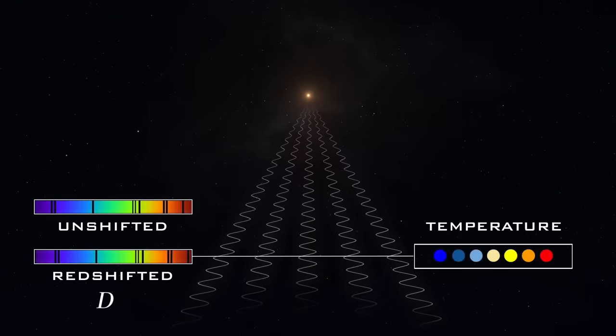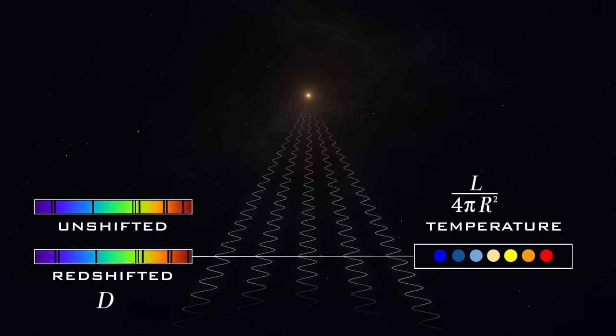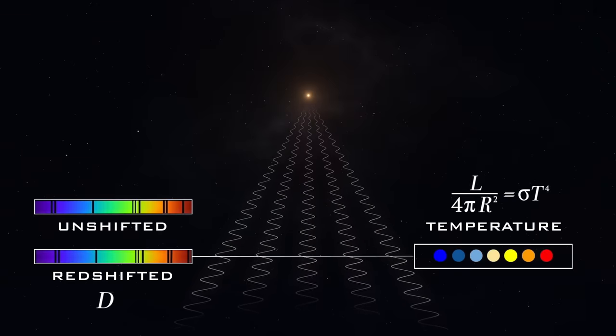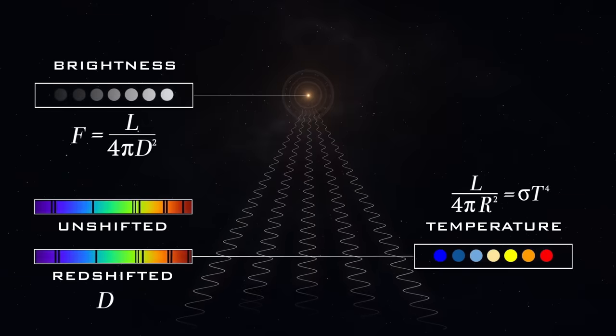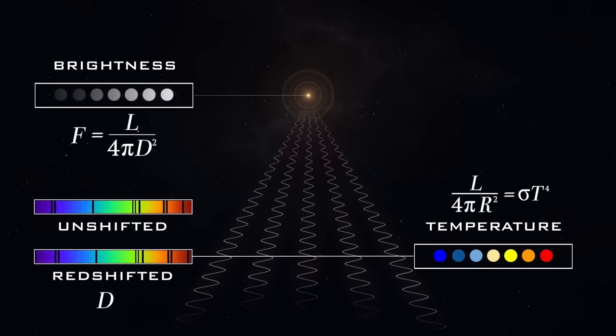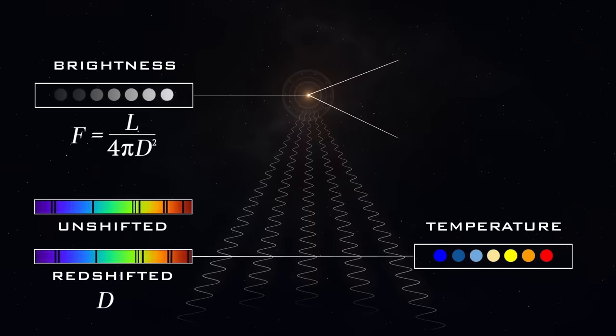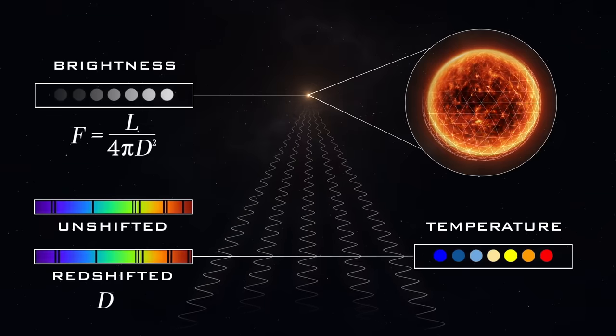The spectrum also tells you the temperature of the star, because it should approximate a black body curve. And now, the power radiated per unit area of the star is strongly dependent on its temperature. So, if you know how bright the star appears from Earth, how far away it is, and how much power it's radiating per unit area, well, then you can work out its area, and hence its radius.